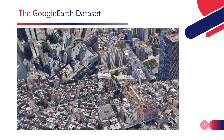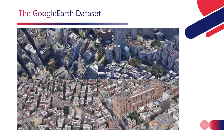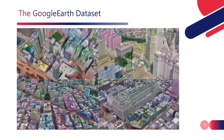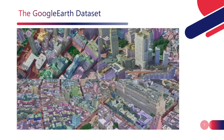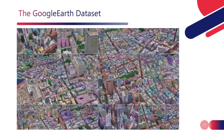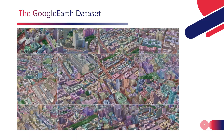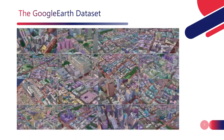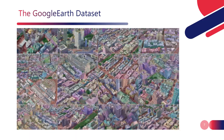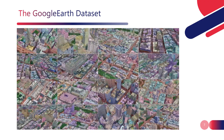Here are some examples of the Google Earth dataset. Besides realistic images, the dataset also provides semantic labels for background objects and instance labels for buildings. Both labels are automatically generated by projecting the city layout onto images using the camera parameters provided by Google Earth.